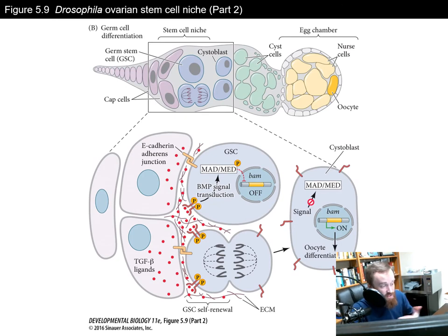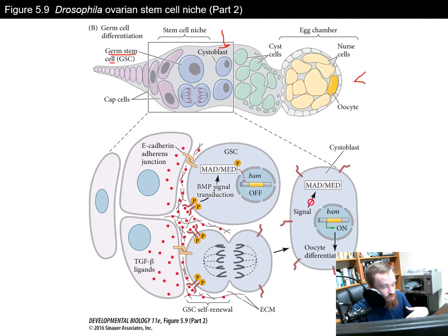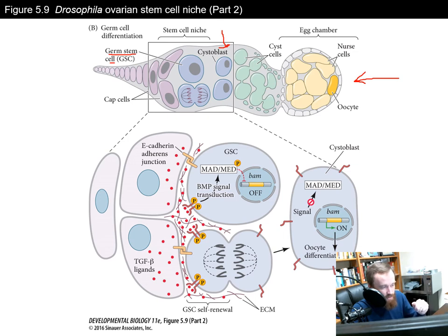Let's look at how eggs are produced in the ovaries of Drosophila. Similar to the testes, we have cap cells — like the hub cells in the testes — and attached to them are germ stem cells or GSCs. As these GSCs divide, they produce cystoblasts that will mature and move further away from the stem cell niche and cap cells, eventually developing into an oocyte surrounded by follicle cells. During division, one daughter cell remains tethered to the cap cells by E-cadherin molecules, and the other begins differentiation into an egg cell.